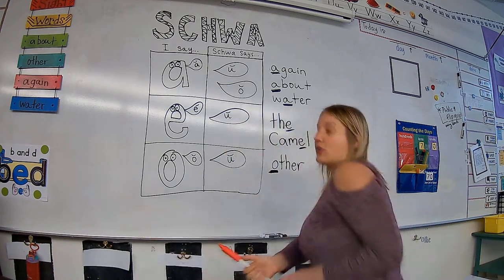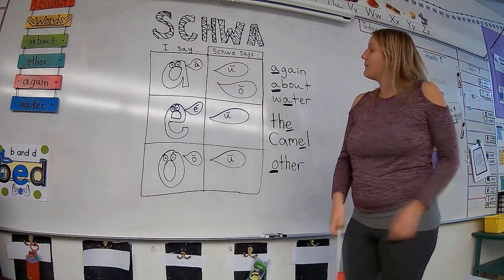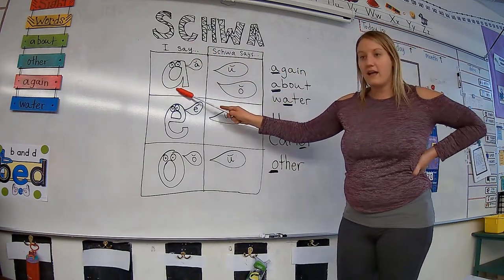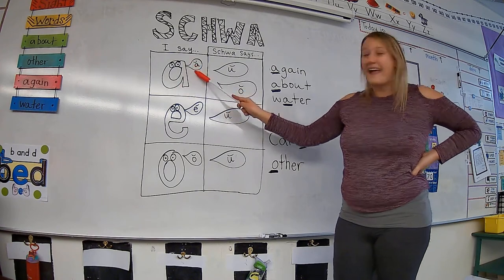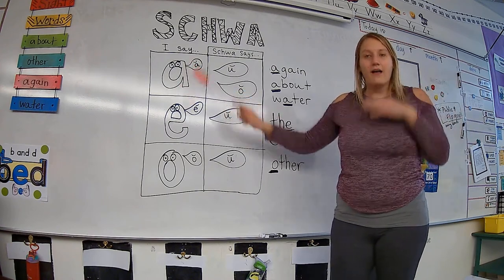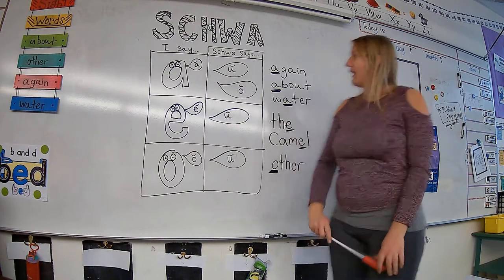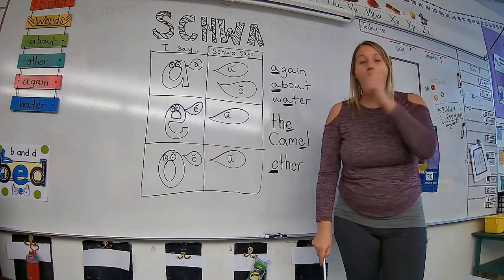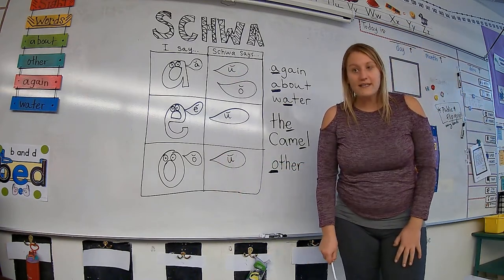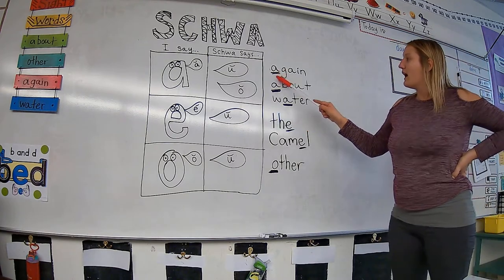So behind me, you'll notice I drew some schwa letters. We have the letter A. And A in a short sound typically says, ah. But, my friends, if we have a schwa A, it can say uh and it can say ah. What? So let's look at some of these words. We have the word again.